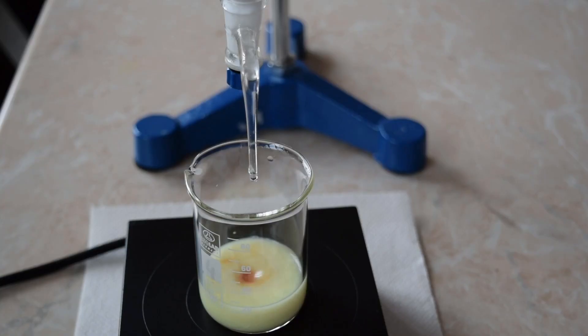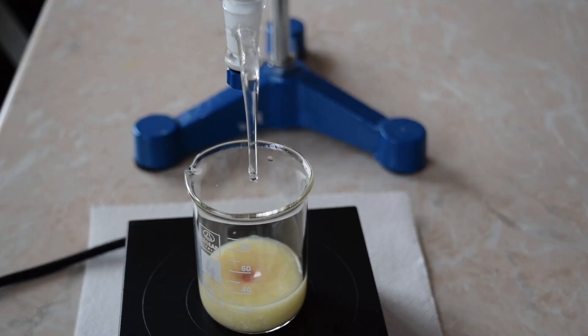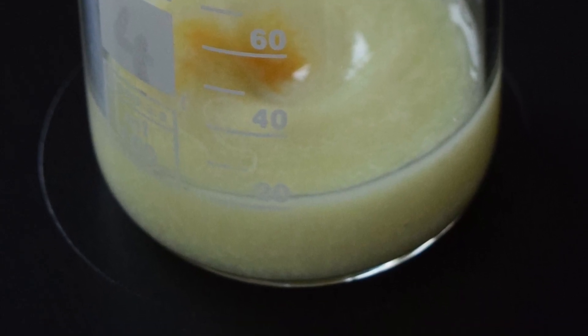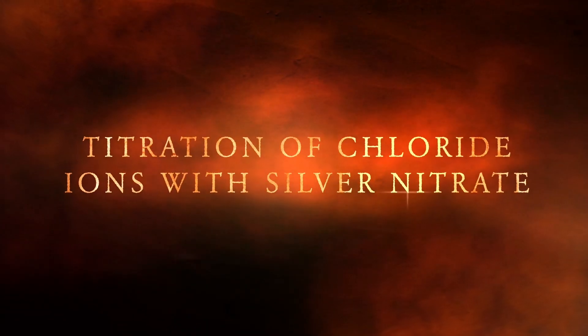Chloride-containing solutions can be analyzed via titration with silver nitrate using chromate ions as indicators for the endpoint of titration. Titration of N-chloride with silver nitrate.